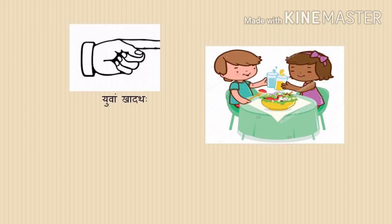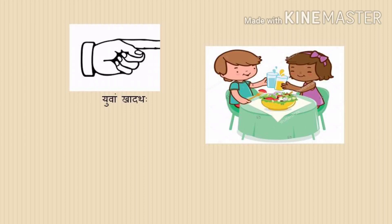Now let us move into Dvivachanam, where two persons or two things are involved. The Dvivachanam form is: Yuvam Kadhata, meaning 'you both are eating' or 'you both eat'. Here the subject is Yuvam meaning 'you two', and the verb Kadhata ends with Thaha. Note the difference from Pratama Purusha where a short Tha appears, whereas here a Deerga (long) form appears.